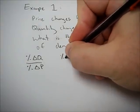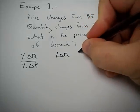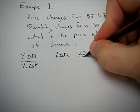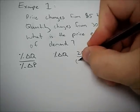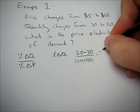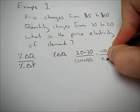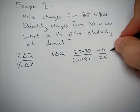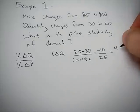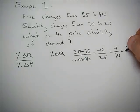First, let's do the percent change in quantity. We take our ending quantity of 20 minus our beginning quantity of 30. Then we have to find what our average quantity is: 20 plus 30 divided by 2. This gives us negative 10 over 25, which can also be written as 4 tenths, or if we divide each by 2, we get 2 fifths.